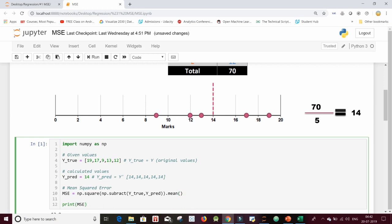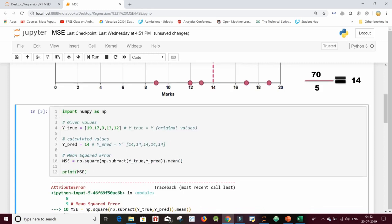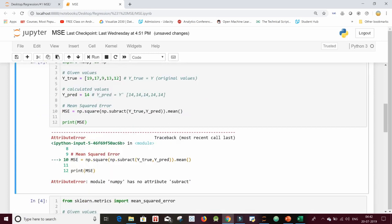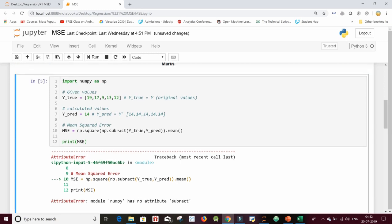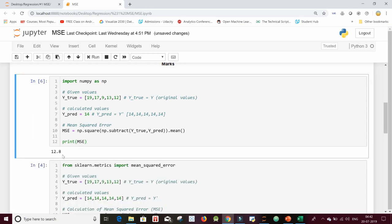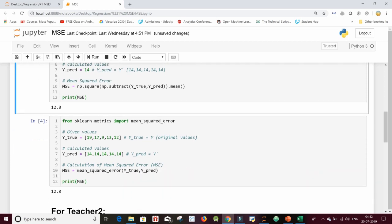Now I'll be printing my MSE to see if it matches what we had just deduced. So I see something over here. Okay, so I'm having a typo. Let's subtract and let's run the cell. And yes, we are indeed getting 12.8 as an answer.